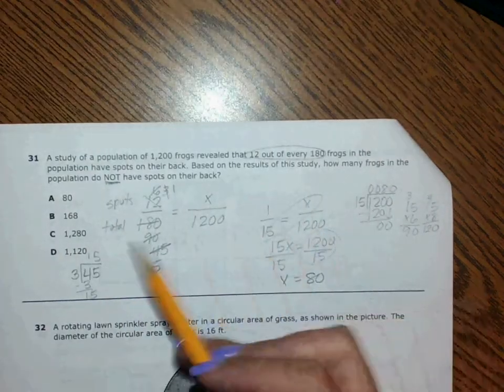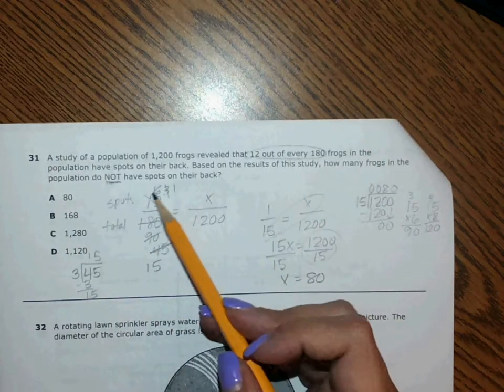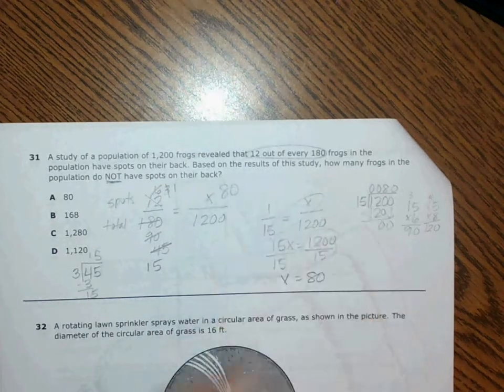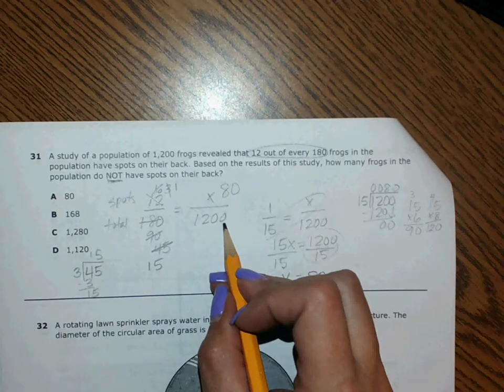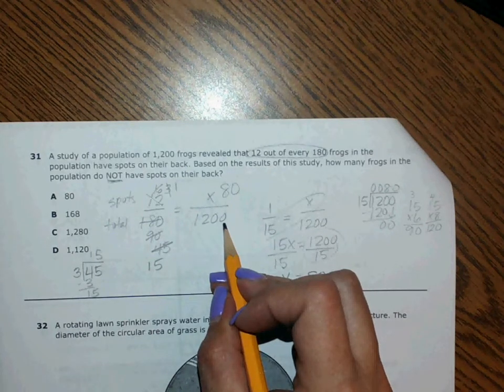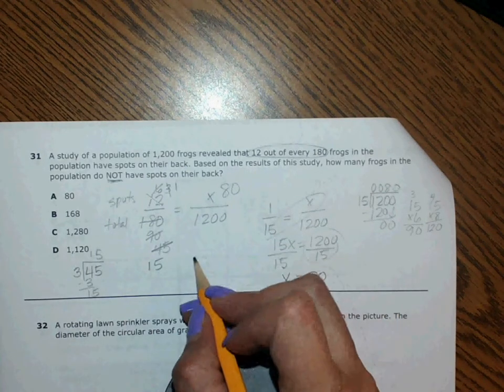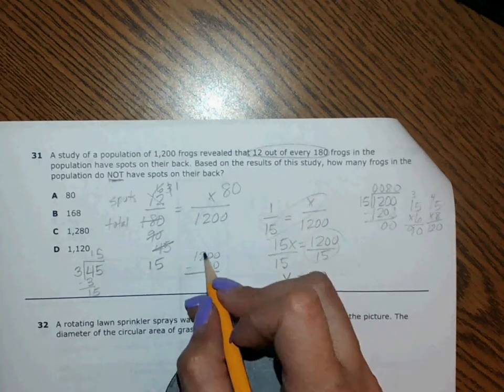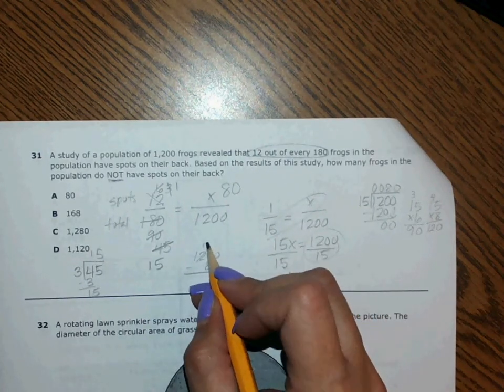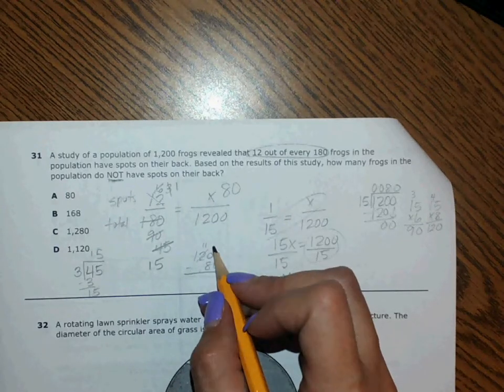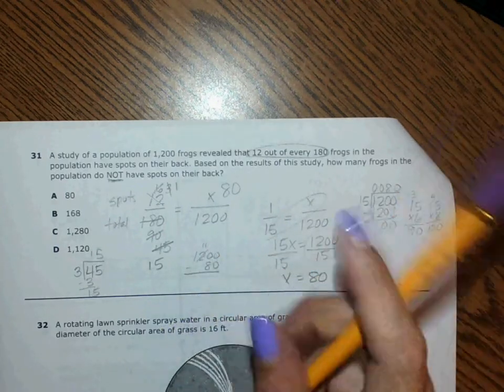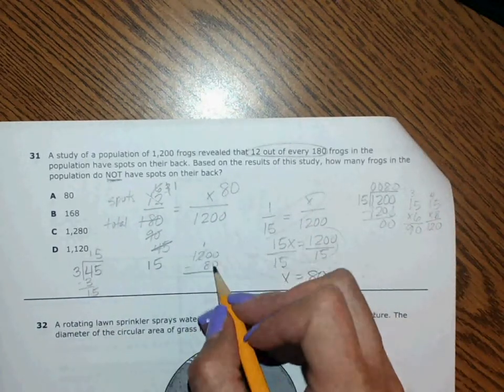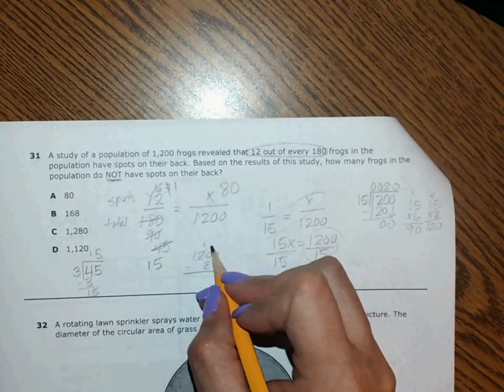But remember, I solved for how many have spots. So 80 of them have spots out of the 1,200. So the ones that don't have spots would be 1,200 minus 80. Borrowing—that's going to be 11. Well, hold on, I'm getting ahead of myself because my brain's tired from that last question. That becomes a 10. 10 minus 8 is 2.